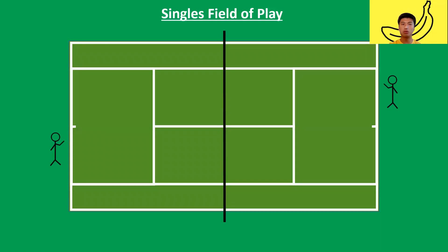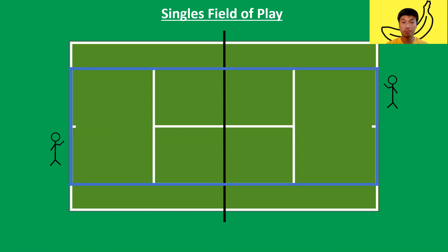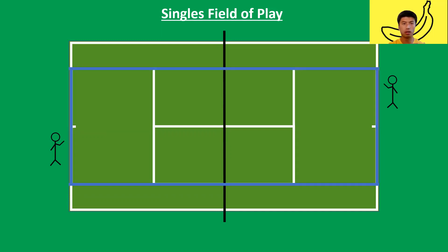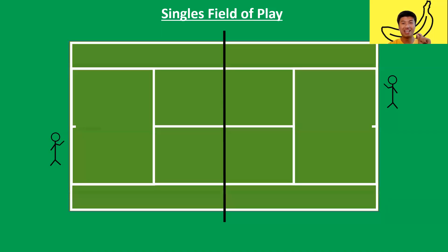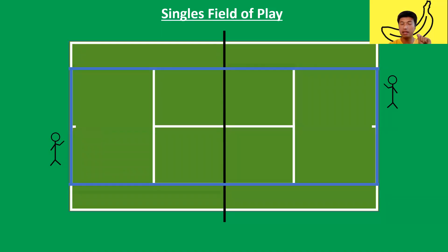On the screen now you see a tennis court with two stickmen. We're going to talk about the singles field of play first. The blue rectangle highlighted — that's where the ball is legal. When you play, the ball has to land inside this rectangle here for singles, one versus one. One thing to note is that in tennis, the lines are in. So if it hits the line, any part of the blue line, it is still in.